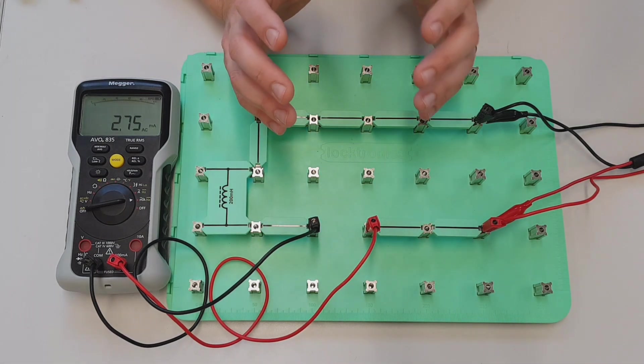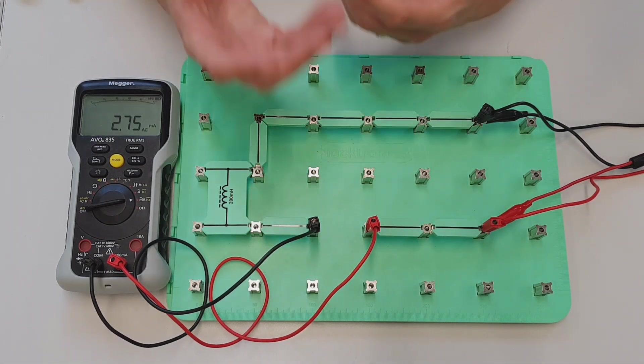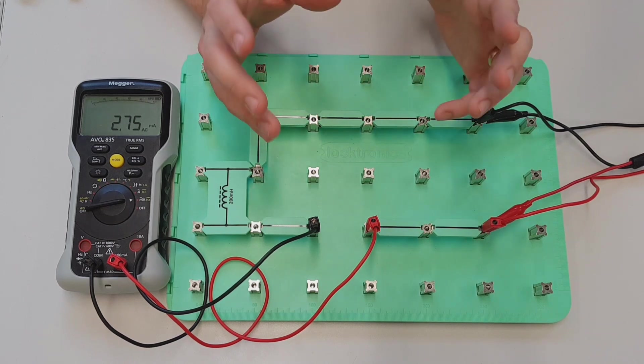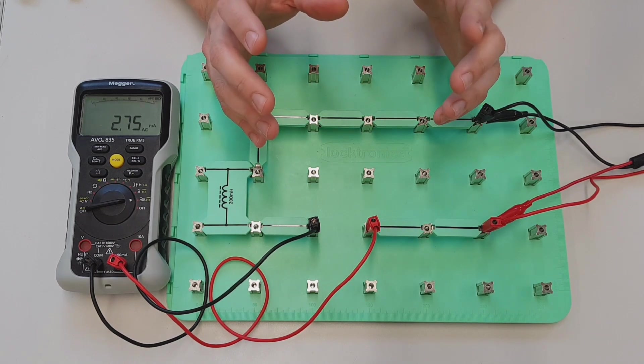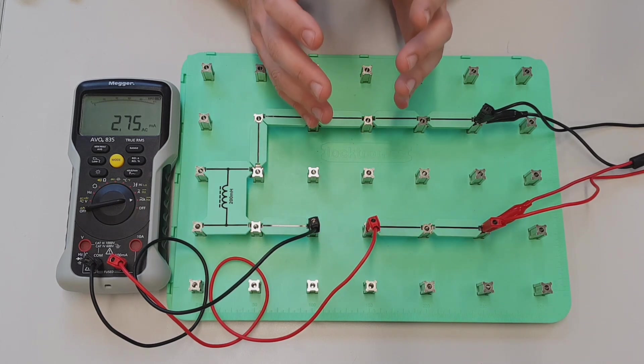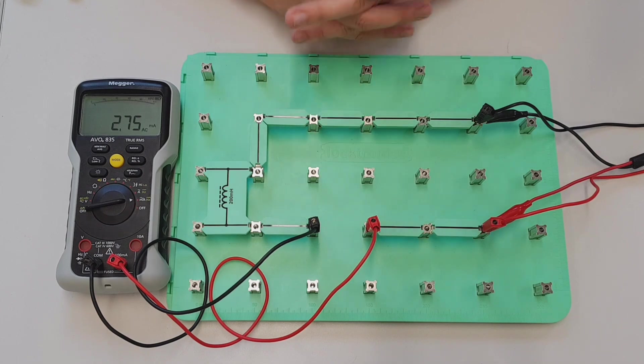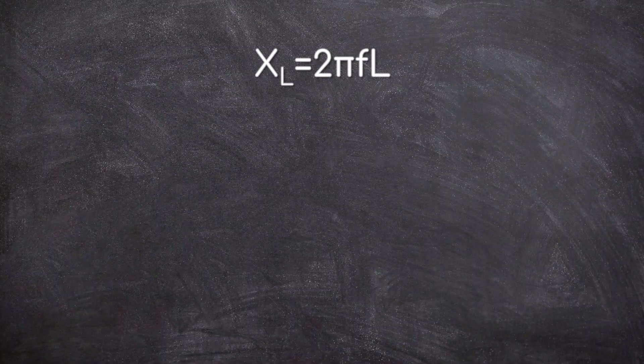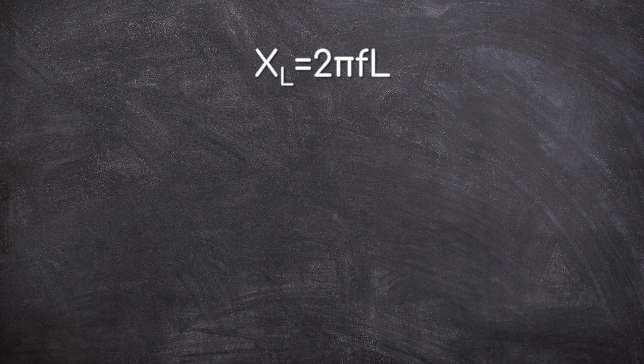At this point in the video we need to bring all this information together to create a new mathematical formula, and this is what we're going to record in our box on our worksheet. The formula looks like this: XL is equal to 2πfL. We've got a few different things in there, a couple of which we haven't actually mentioned yet, so we'll talk about what those mean momentarily.